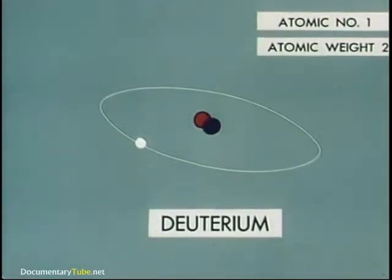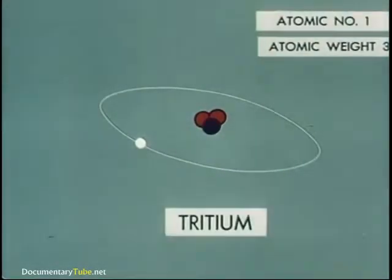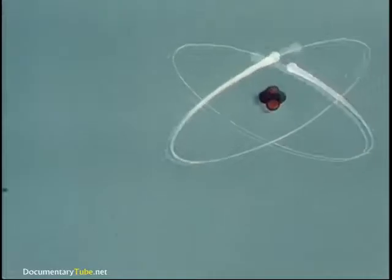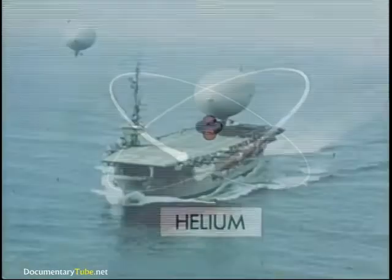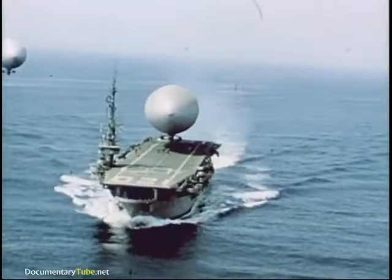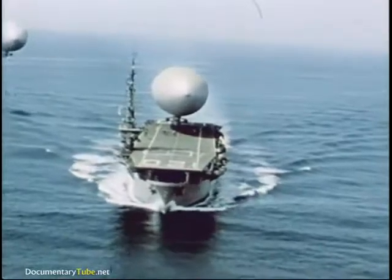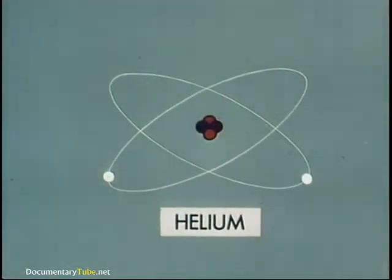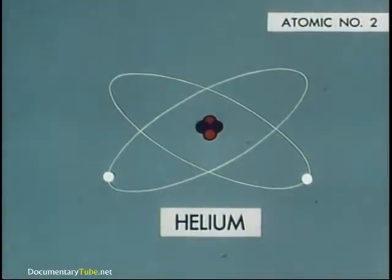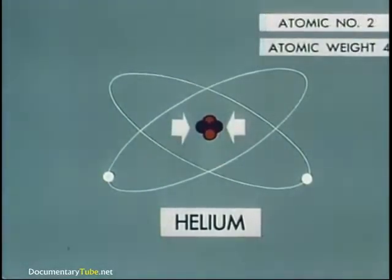This is the hydrogen in heavy water. Adding another neutron produces a third hydrogen isotope called tritium. One rung above hydrogen on the ladder of elements is helium. A helium atom has two electrons and a nucleus composed of two protons plus two neutrons. So helium has the atomic number two, same as the protons which it possesses, and an atomic weight of four, its protons plus neutrons.